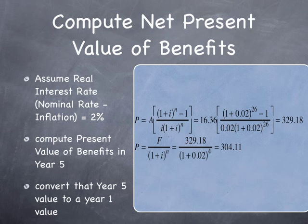We have 26 years of benefits: $16.36 million per year at 2% interest for 26 years. Running through the equation gives a present value of $329 million starting in year 5. Taking that year-5 present value back to today gives $304 million — that's the net present value of benefits.